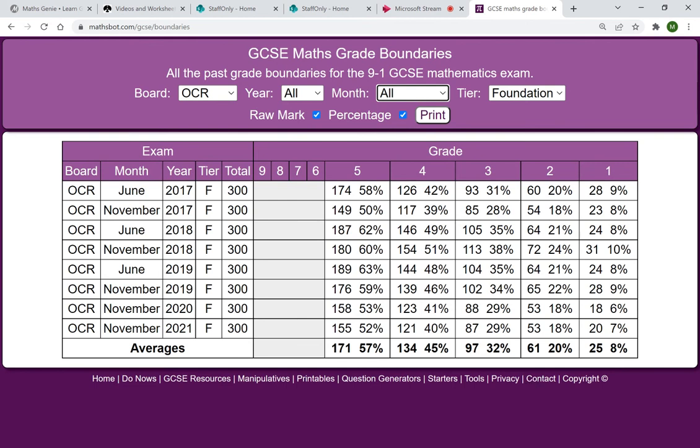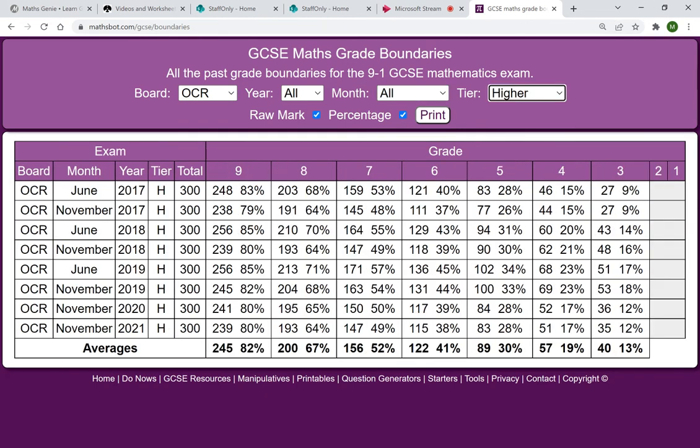So when we're looking at this foundation, 45% for a grade four, less than 50%. Don't let people think though that foundation is the easy option because it's not. When we look at the higher, we're looking at 19% again for that four, 30% for the five.